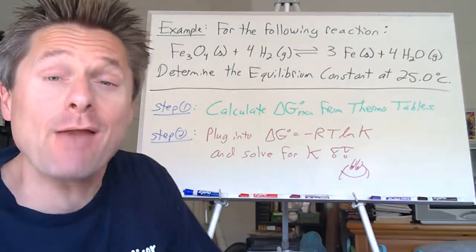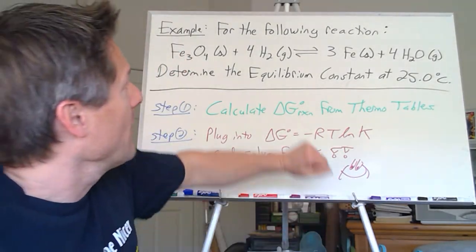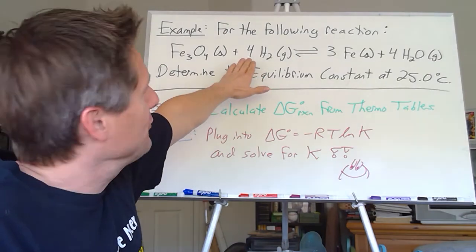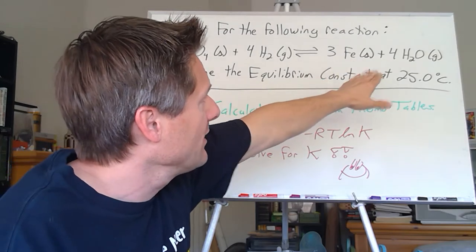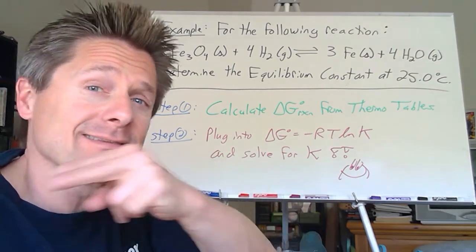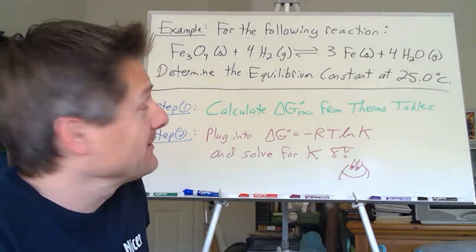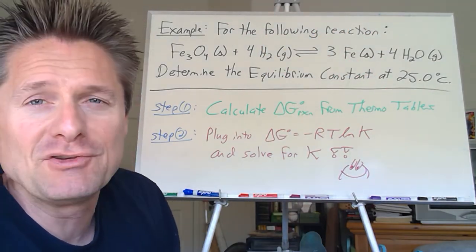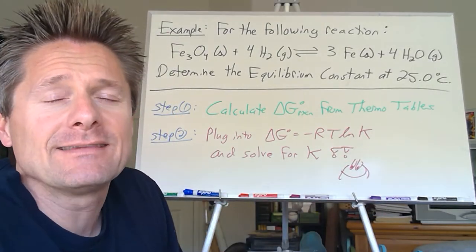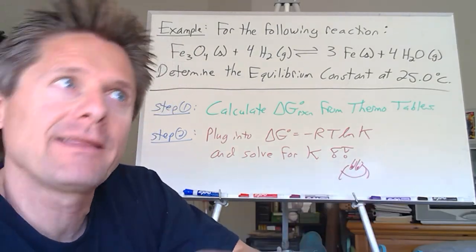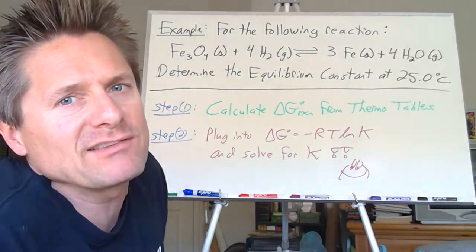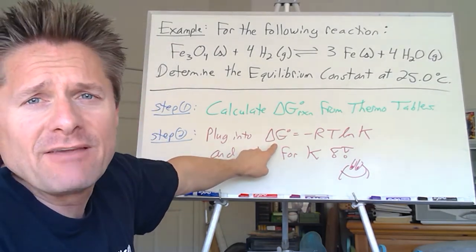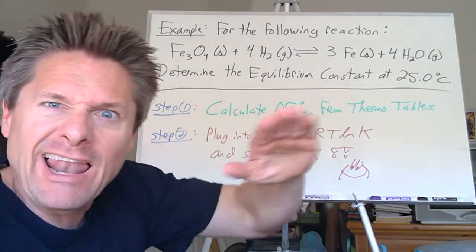Here's a very common type of problem. We've got a reaction: Fe₃O₄ solid plus four moles of diatomic hydrogen gas giving us three moles of iron solid plus four moles of water vapor. Remember, it makes a difference if water is a liquid or a gas because those are different numbers on the thermodynamic tables — include your states. Determine the equilibrium constant at 25.0°C. We love when it's at 25.0°C because delta G° is very easy to calculate in one step.